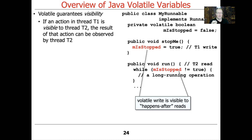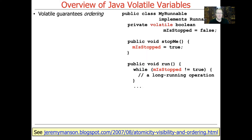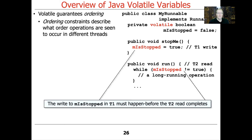Were you to remove the volatile, that wouldn't necessarily happen — the thread could run forever. The volatile write value will be visible to happens-after reads: the write to mIsStopped will happen before the reads that occur. Finally, volatile guarantees ordering as well. The ordering constraints describe what order operations are seen to occur in different threads — the write to mIsStopped in T1 must happen before the T2 read completes.